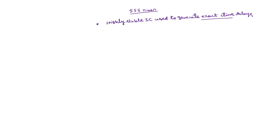We can generate time delays using other circuits such as operational amplifiers. But in order to generate precise time delays, we will use the 555 timer. In many industrial applications, it is required to generate precise time delays. Even a 1 microsecond error will cause a lot of changes in the operation of an industrial process. So in such applications, we will use the 555 timer.